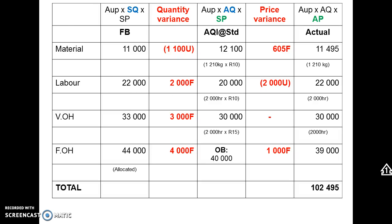You will remember this layout from our previous two videos on variable cost variances. You can ignore the quantity and price variance headings here, because for fixed overheads we get different variance names. The quantity variance is called the volume variance — fixed manufacturing overhead volume variance — and on the price side it's called the spending variance.